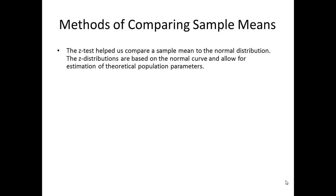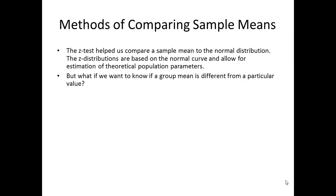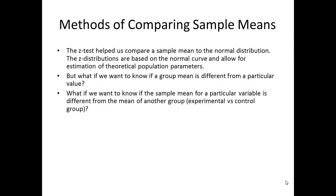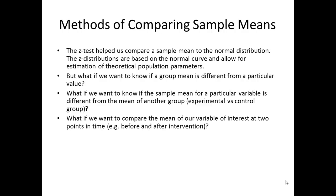The z-test introduced earlier helped us compare a sample mean to the normal distribution. Z-distributions are based on the normal curve and allow us to estimate a theoretical population parameter. But what if we want to know if a group mean is different from a particular value or test statistic? What if we want to know if the sample mean is different from the mean of another group, say an experimental versus a control group? What if we want to compare the mean at two points in time, say for a group receiving an intervention? We would do that with the t-test.